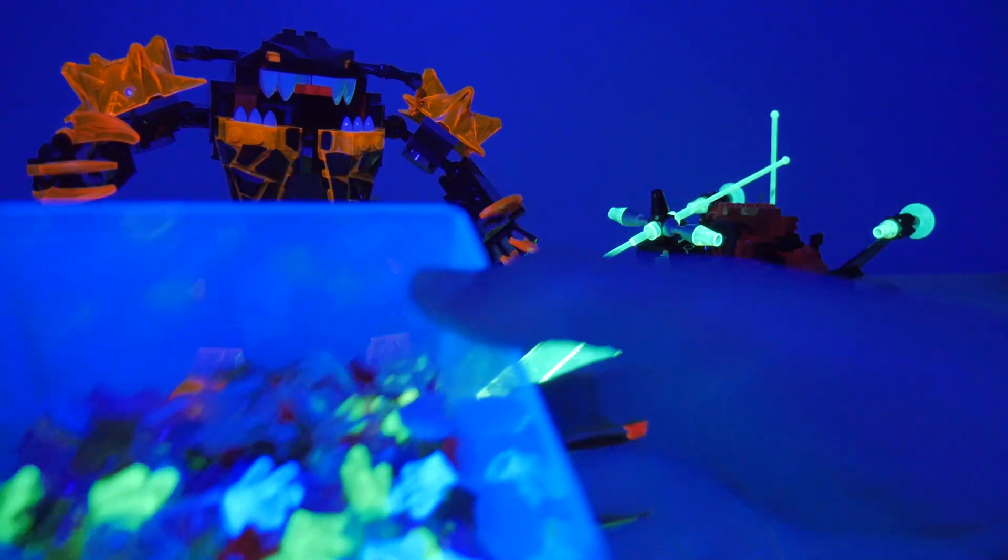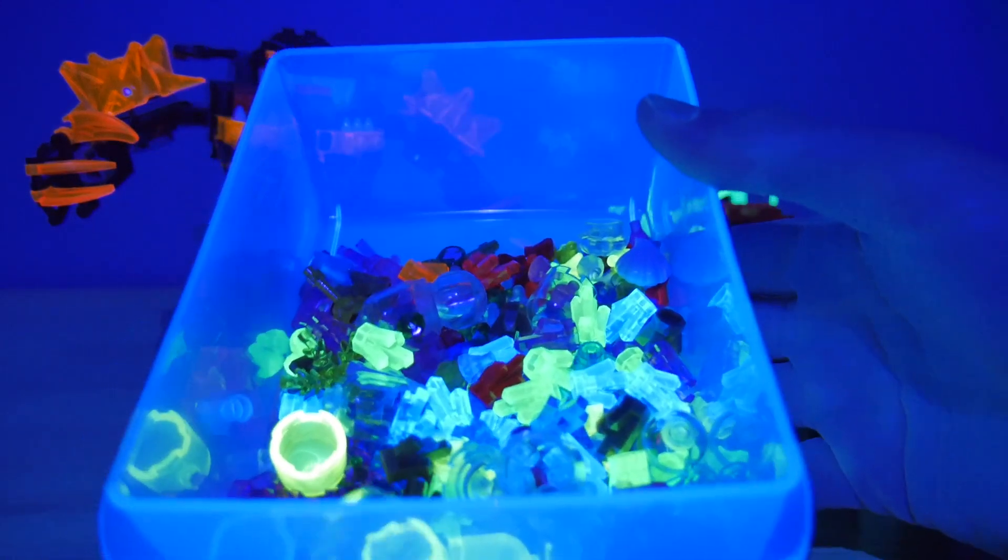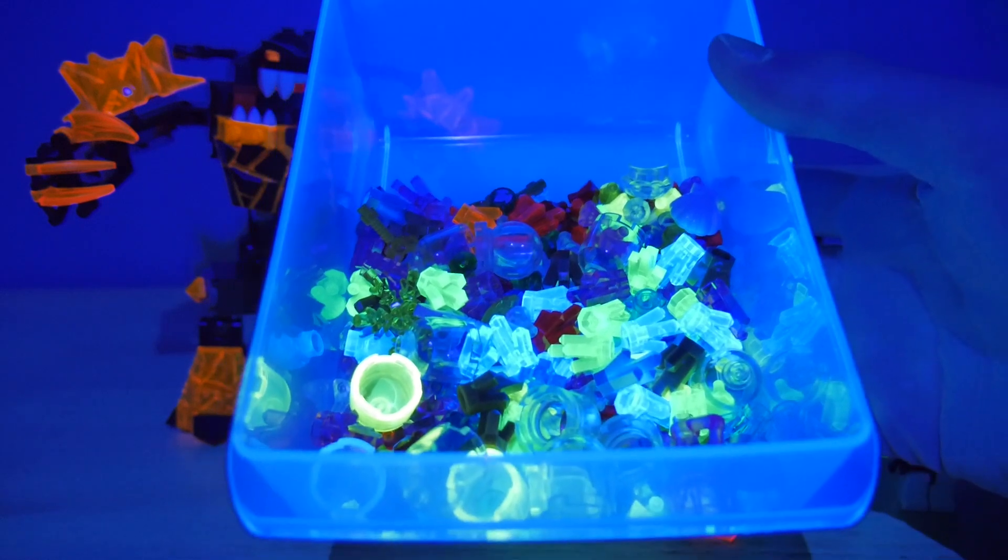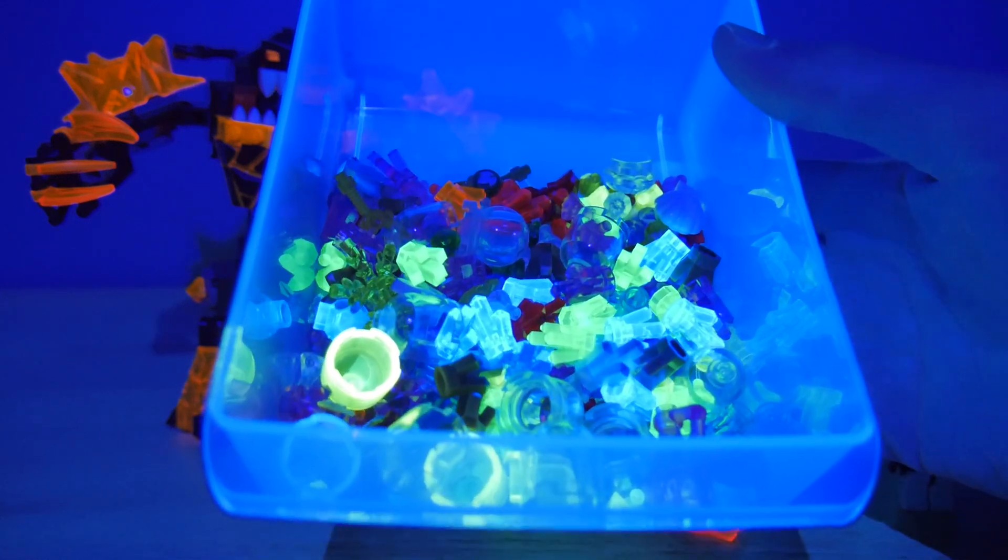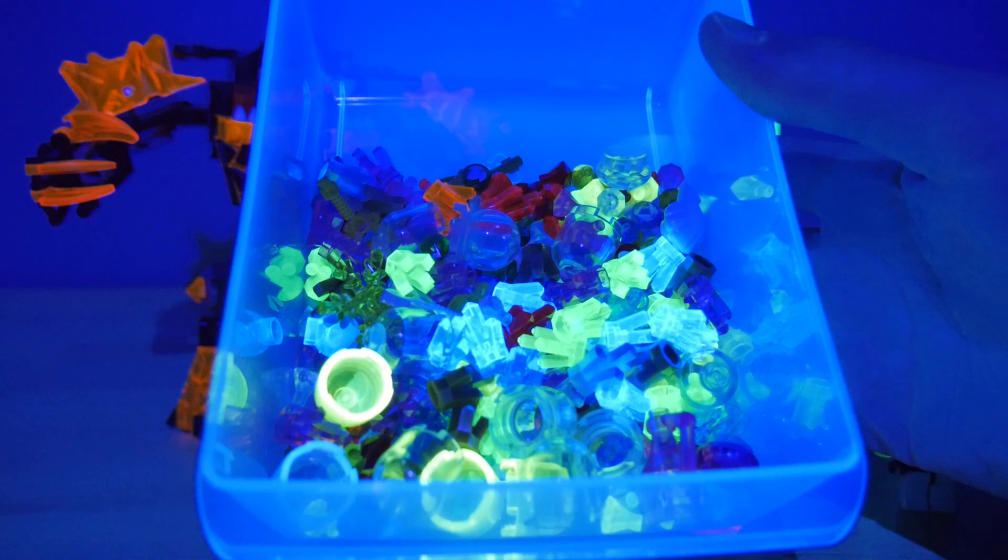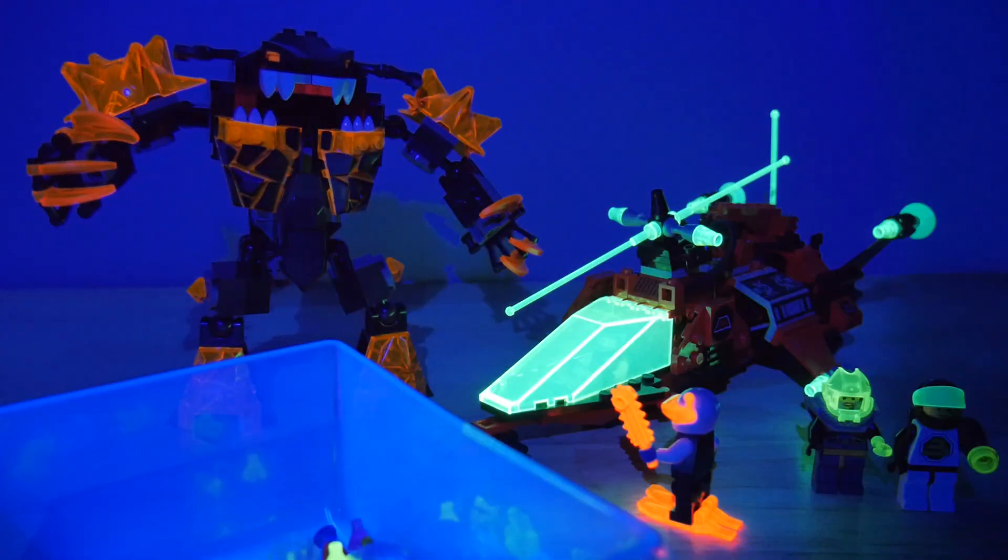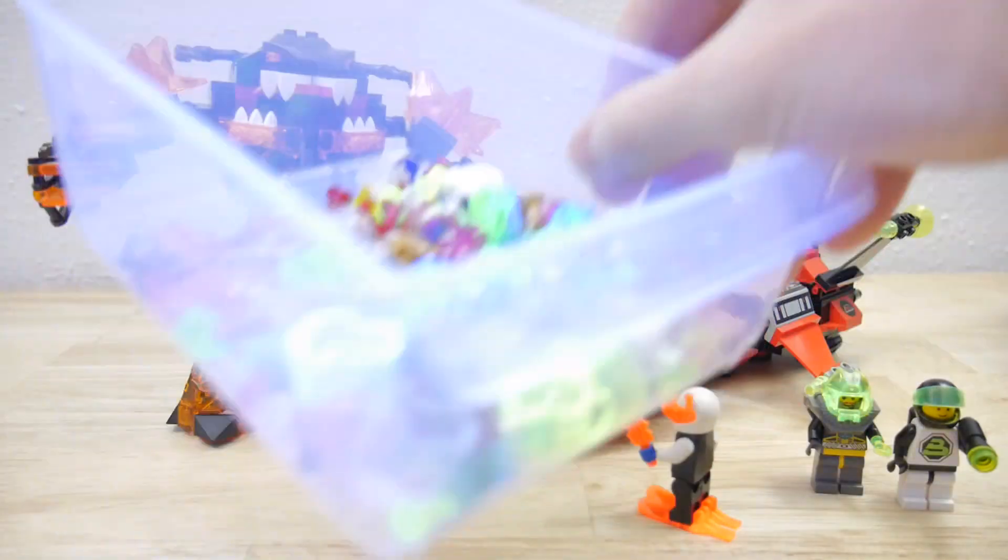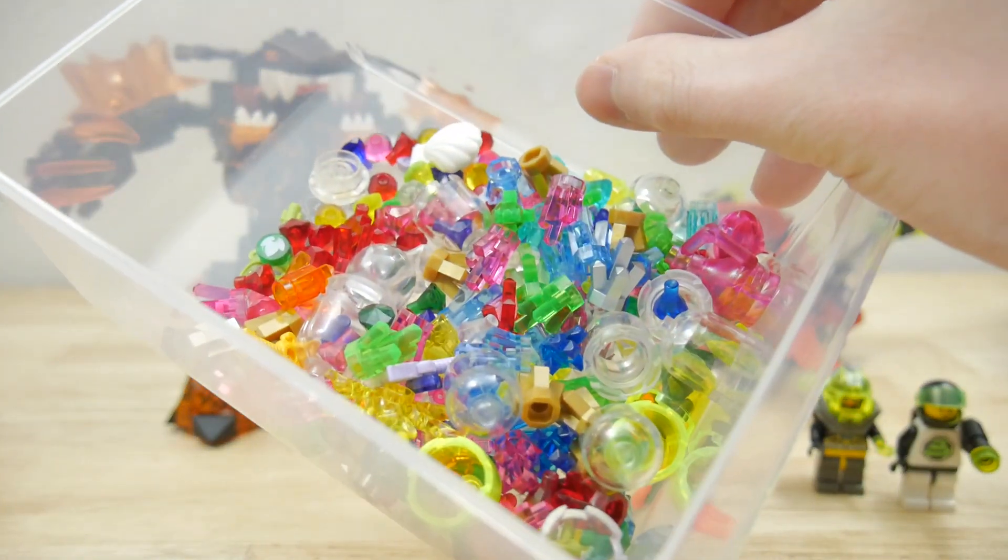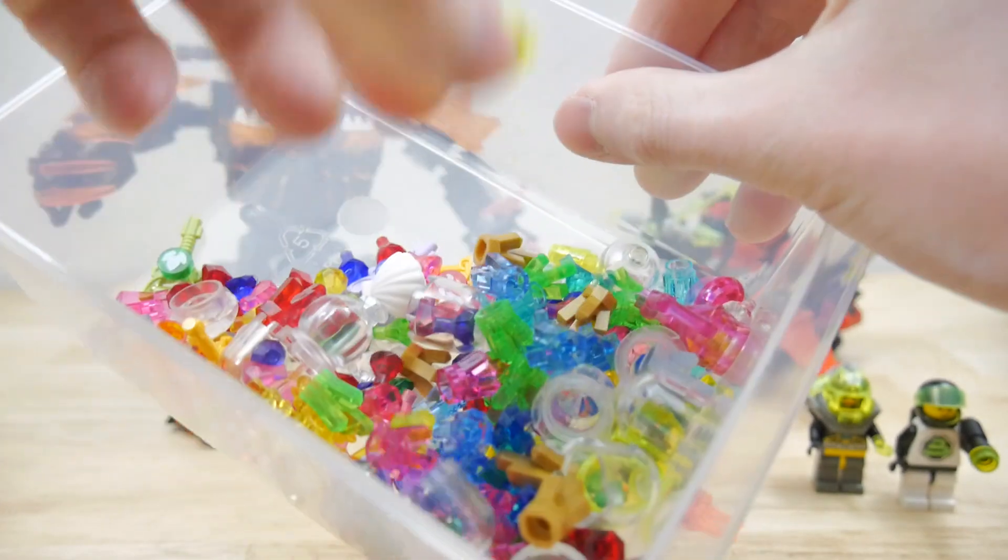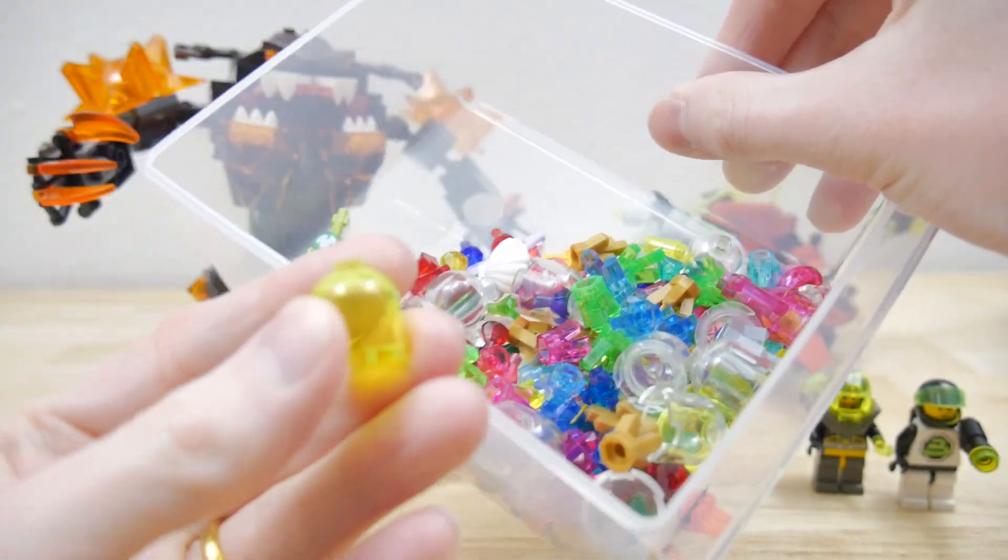Now let's take a look at some other parts. For example, here's a bunch of crystal parts. Now you can see again we have some neon green ones glowing brightly, as well as some other interesting ones. So under normal light, you have pieces like this which are the neon green.